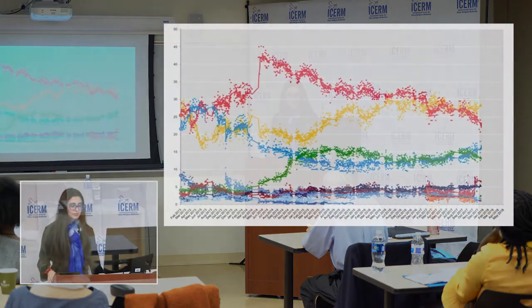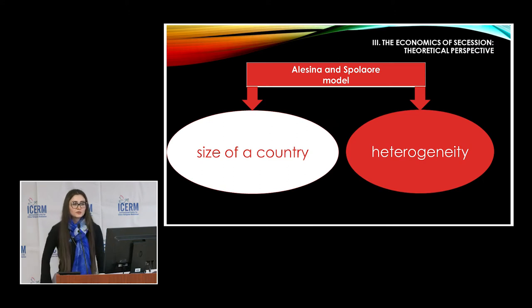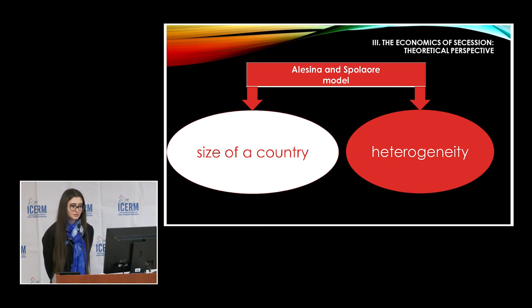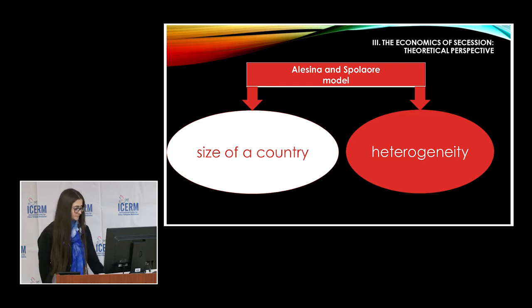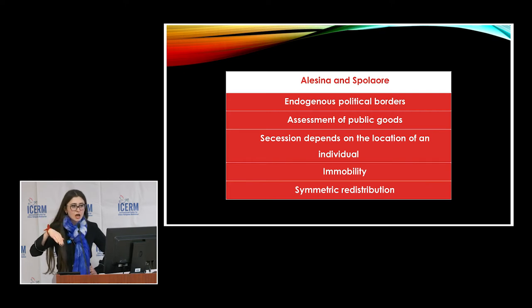This topic is very urgent today, especially in Italy. I'll now discuss the theoretical perspective using the model of Alesina and Spolaore. They specify two main factors when speaking about secession: the size of the country, and the heterogeneity of the population. Their model uses endogenous political borders as an ideal economic framework because it is easier to calculate.